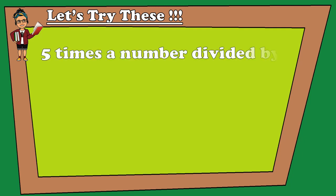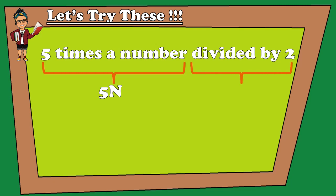Let's try this: change '5 times the number, divided by 2' into an algebraic expression. 5 times the number is 5N, and then divided by 2. So we get 5N divided by 2.